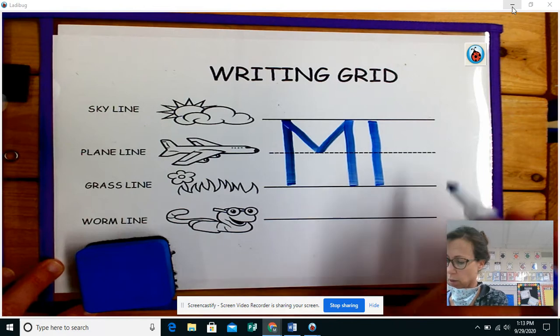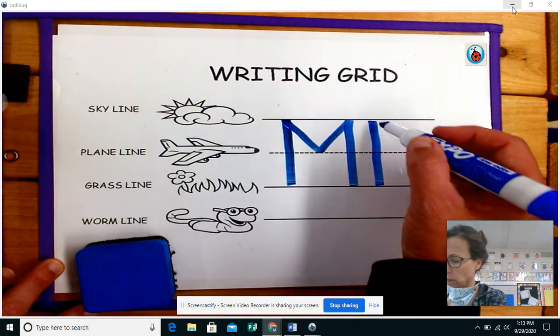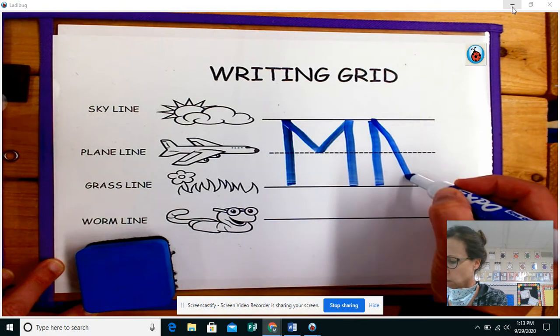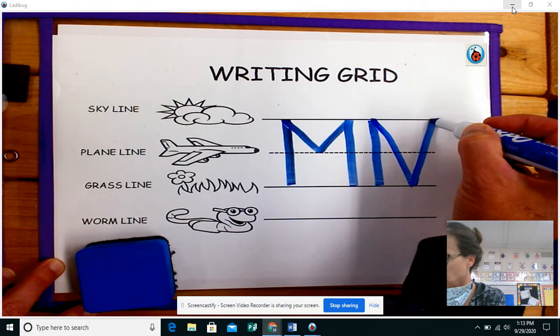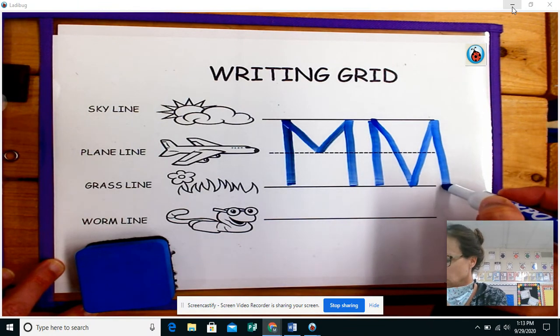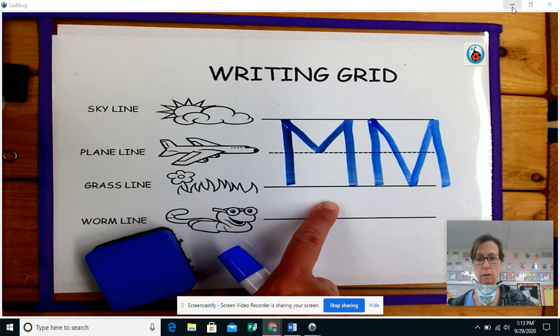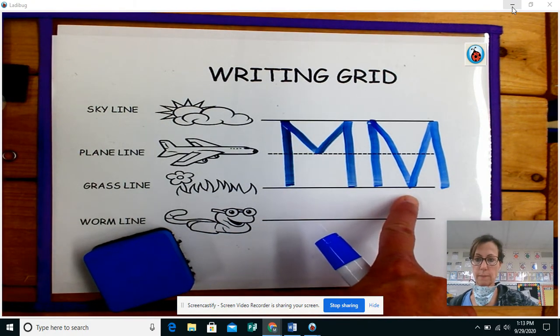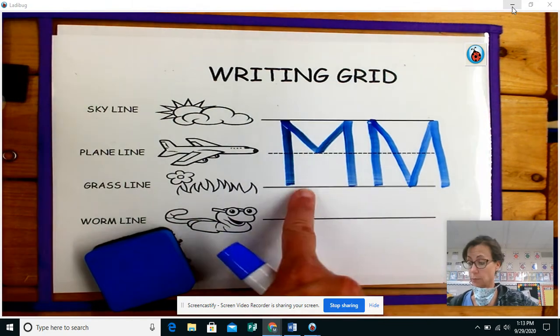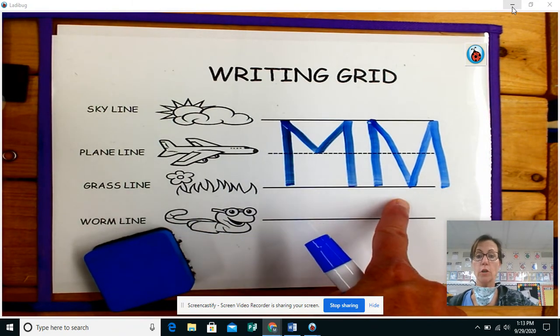So all that's the same, but this time we're not going to stop at the plain line. We're going to go all the way down to the grass line, all the way back up and all the way back down. So really you could do it this way or you could do it this way. It's really up to you. Either one of those are correct.